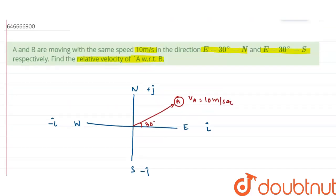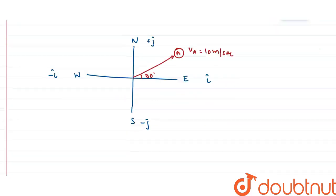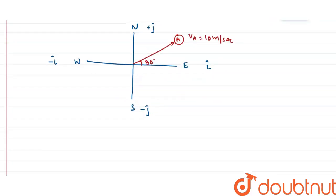The second particle B is also moving with the same speed of 10 meters per second, but in the direction of east 30° south. So B makes a 30° angle with the east axis, going downward.